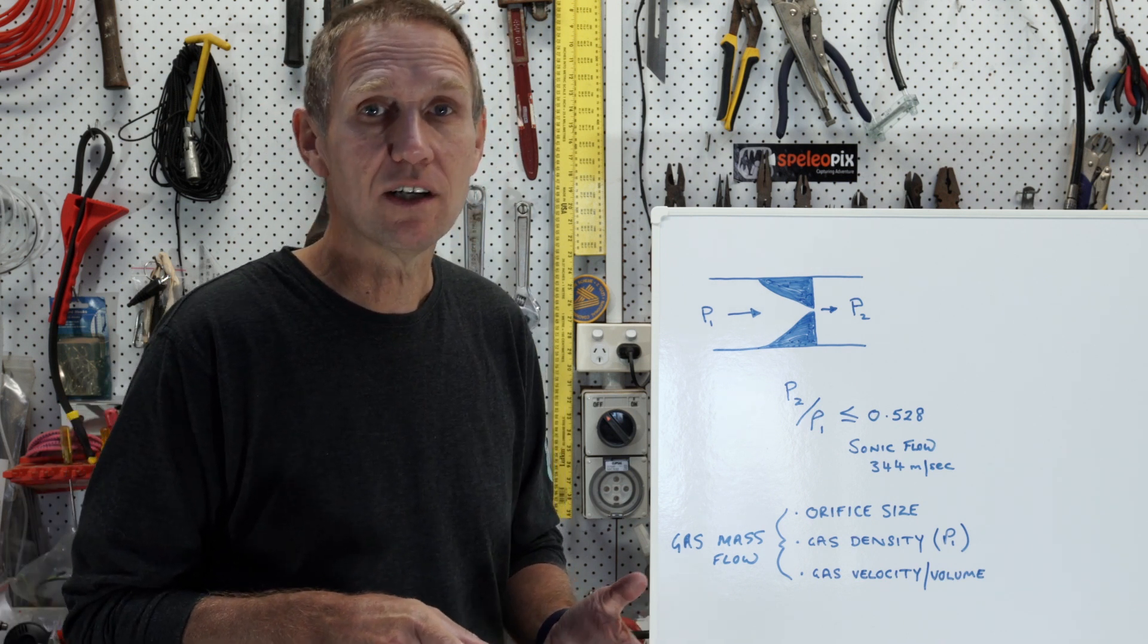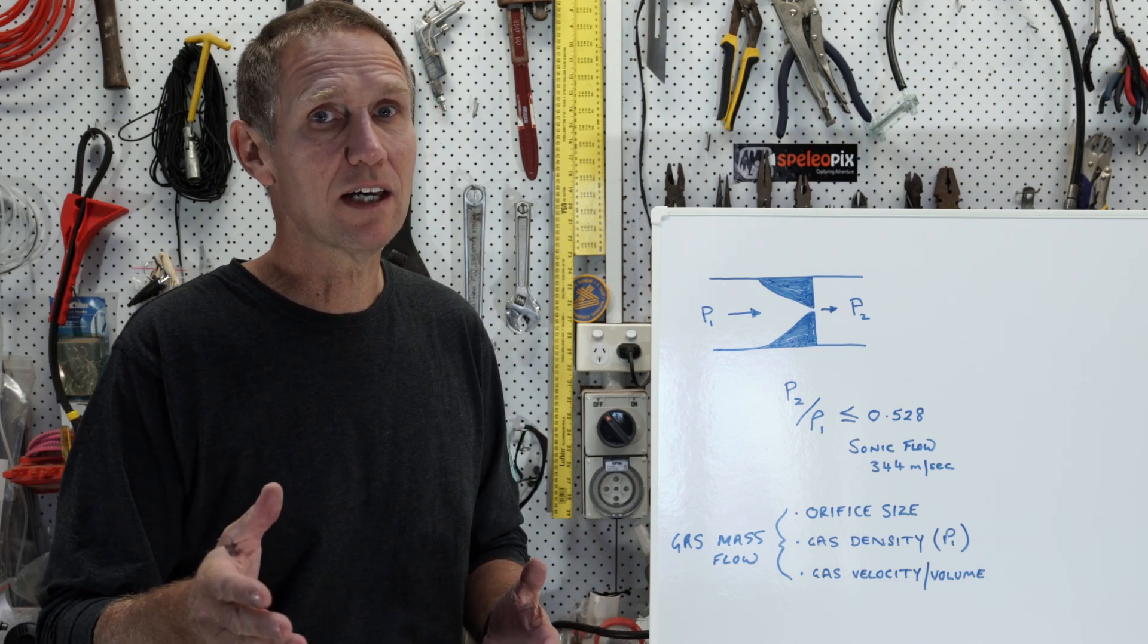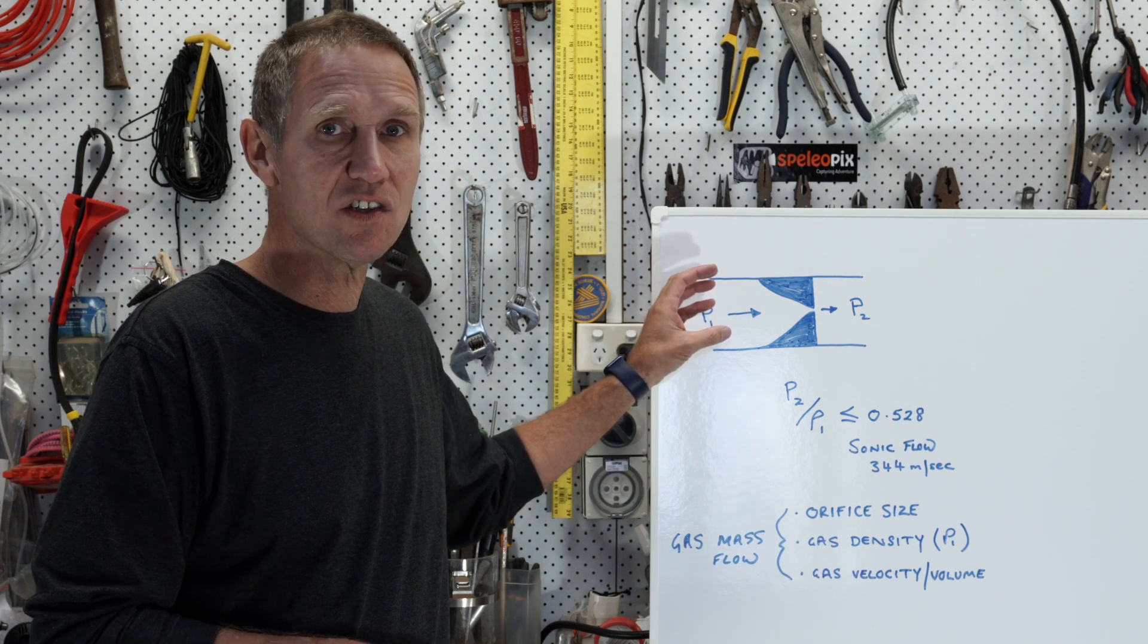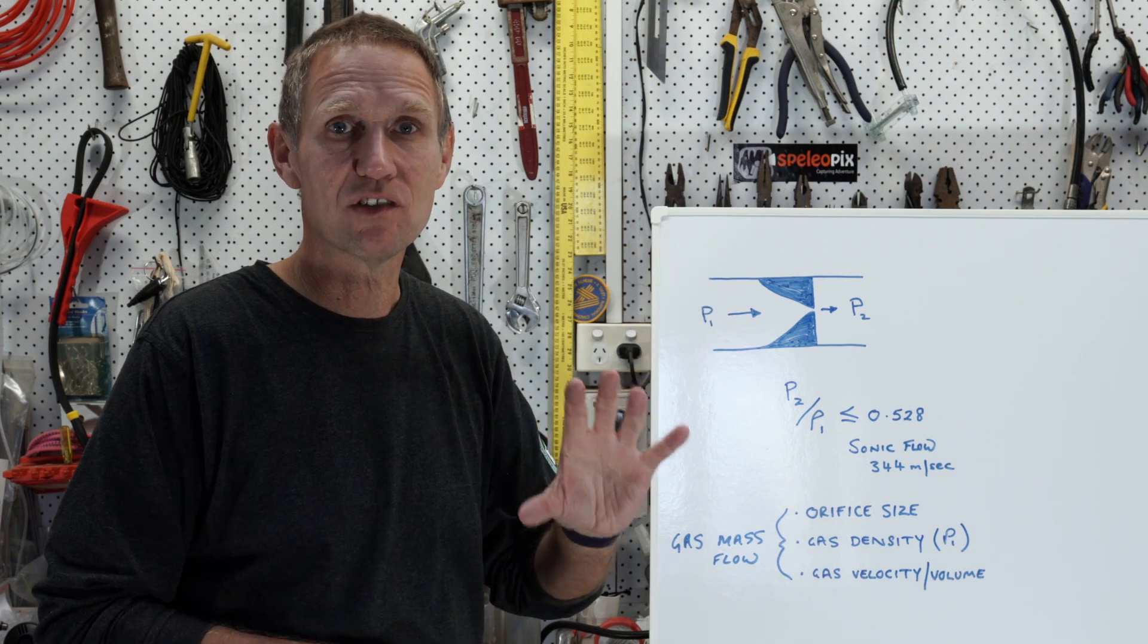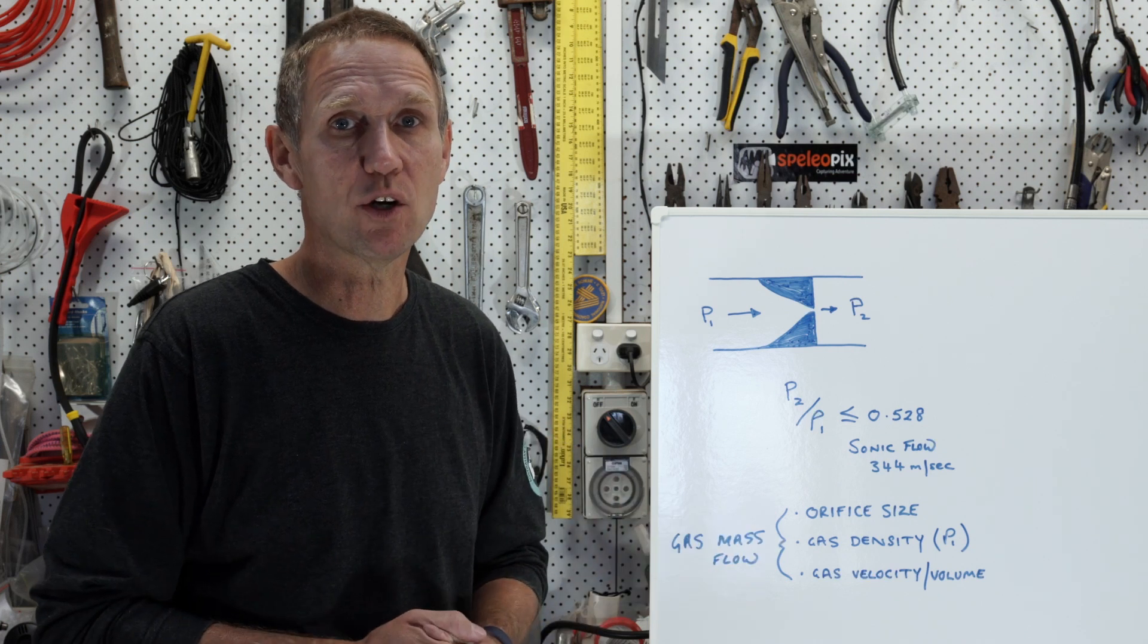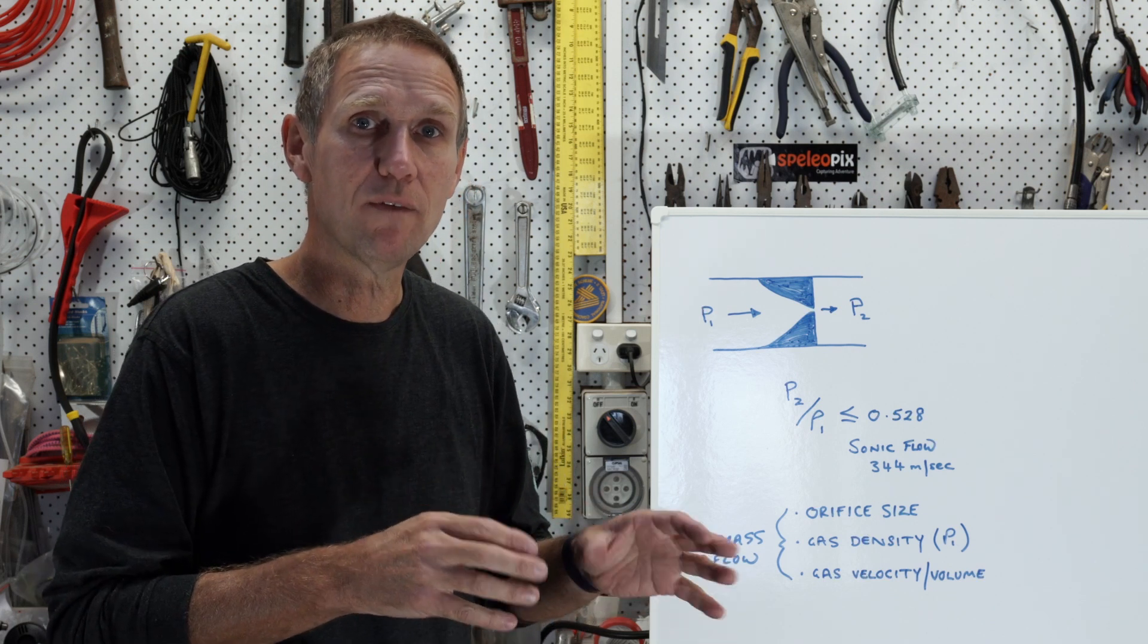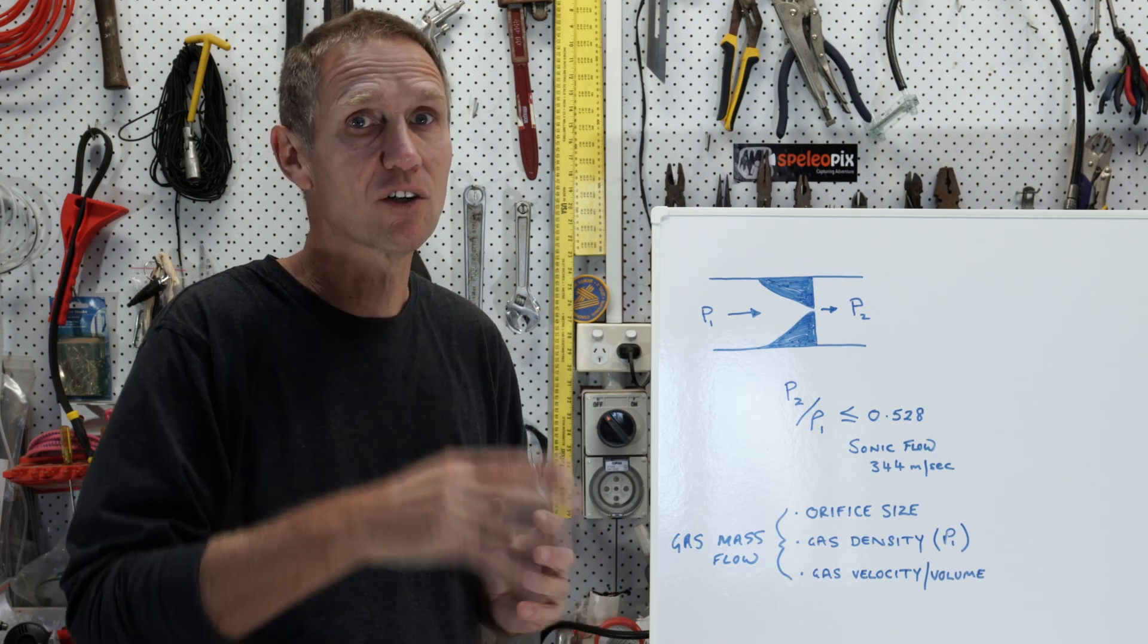Now you might say well why don't I just increase the intermediate pressure in the first stage regulator so that I can go deeper. Well you can do that but increasing that intermediate pressure will increase the gas density in terms of P1. Increased gas density on this side although the orifice is fixed and although you will be at sonic flow, constant mass flow, the gas density will mean that more oxygen is actually crossing the orifice and therefore you may exceed that metabolic requirement that you've set the rebreather up for and you may therefore find that your PO2 instead of gradually declining is actually gradually increasing.